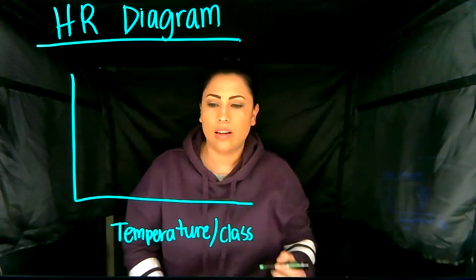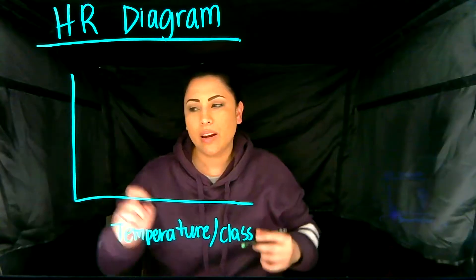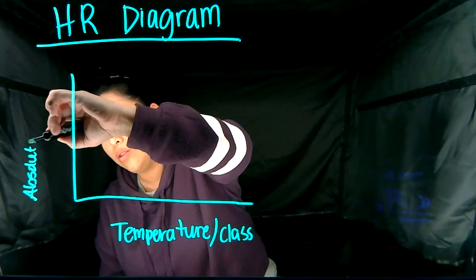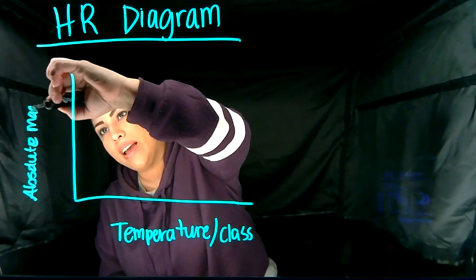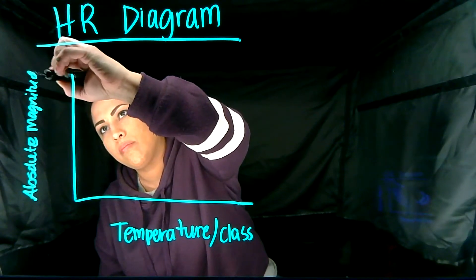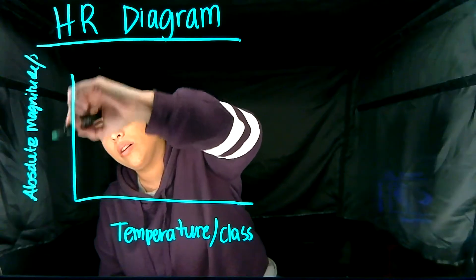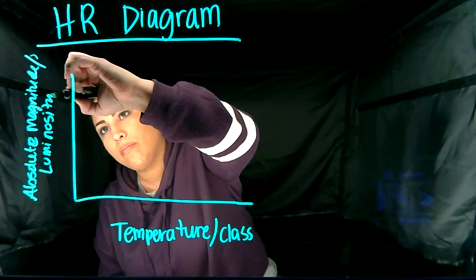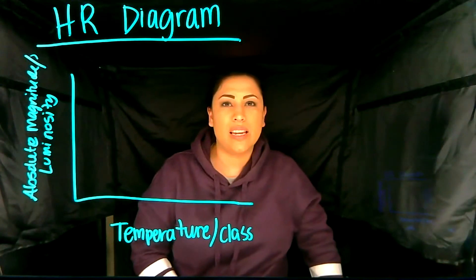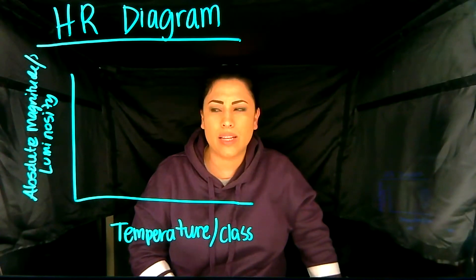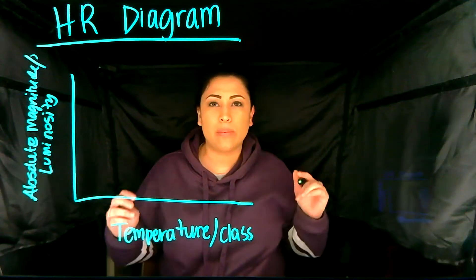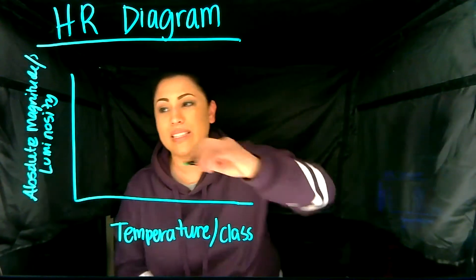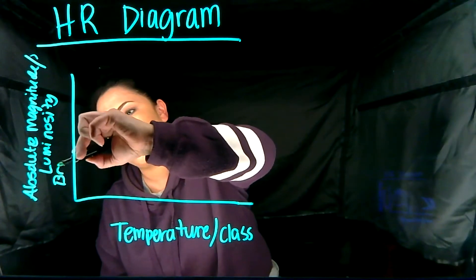On the y-axis we call this absolute magnitude or luminosity. Luminosity — that's a big word. What does it mean? Think about when something illuminates — it lights up. So this is going to be like our brightness. I'll just write that here as well: brightness.